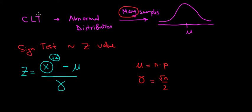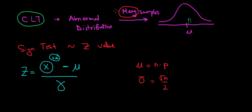The key point with the central limit theorem is that when we have large sample sizes and draw many samples, the frequency distribution shows how often we get sample averages around certain values. Each point represents the average of a specific sample, and plotting the frequency of these averages across very many samples gives us the standard normal distribution. That's why we can use it for the sign test: even though the sign test starts with an abnormal distribution, with a large enough sample size we can approximate it with a standard normal distribution.